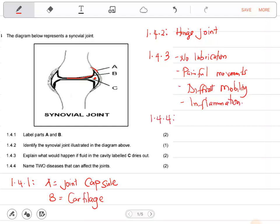Name two diseases that can affect the joints. Here we're talking about diseases of the joint. There are quite a number: we have tuberculosis of the joints, we have arthritis.